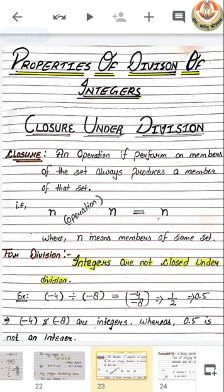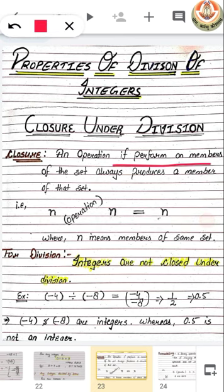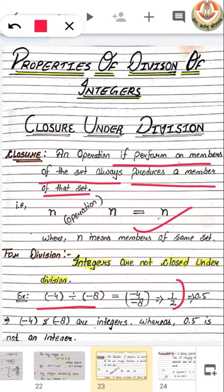Now let's check the three properties — closure, commutative, and associative — for division. For closure: when we divide minus 4 by minus 8, we get 1/2, which is 0.5 — not an integer. So integers are not closed under division.